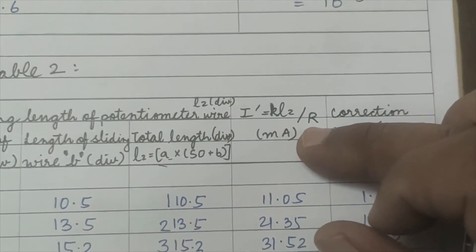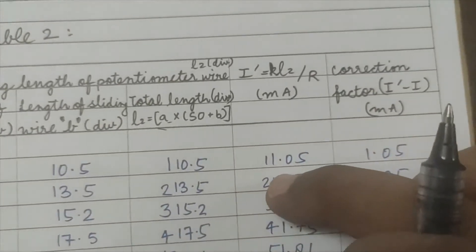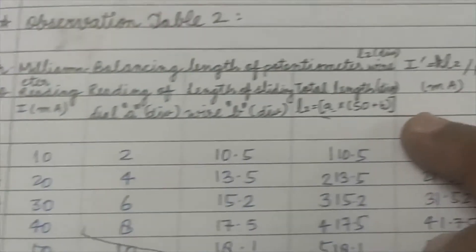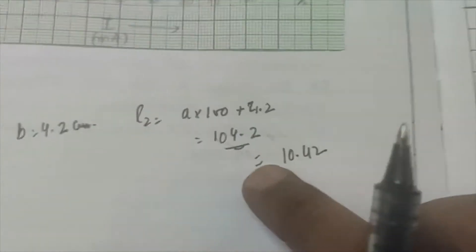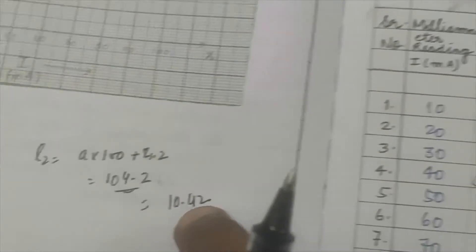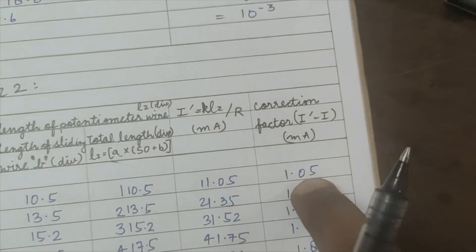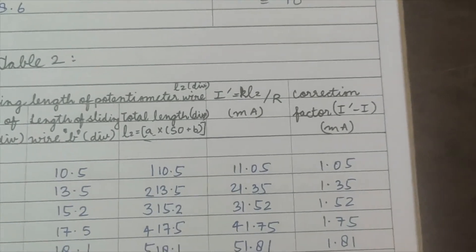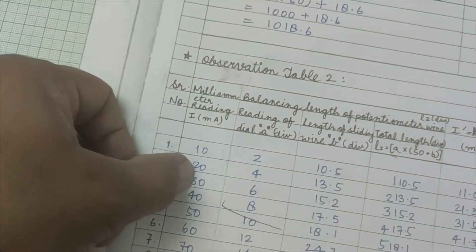The current measured by the potentiometer is I' = K × L2 / R = (10⁻³ × 104.2) / 10 = 10.42 milliamperes. The milliammeter reads I = 10 mA. The correction factor is I − I' = 10 − 10.42 = −0.42 mA, which is much closer to zero than the example value of −1.05.